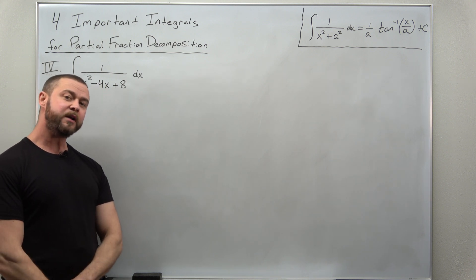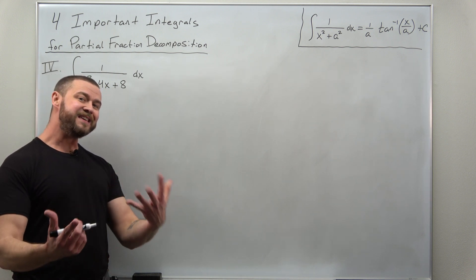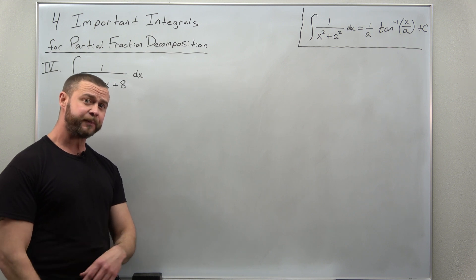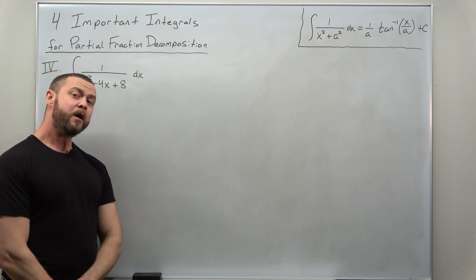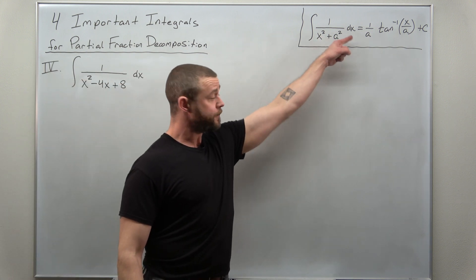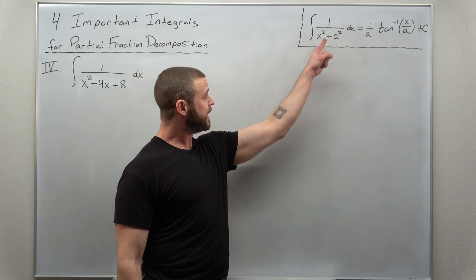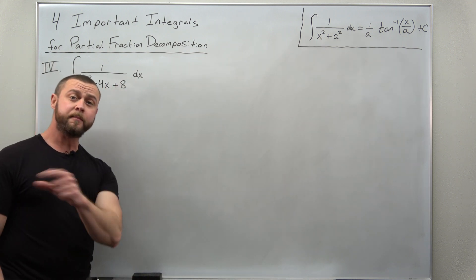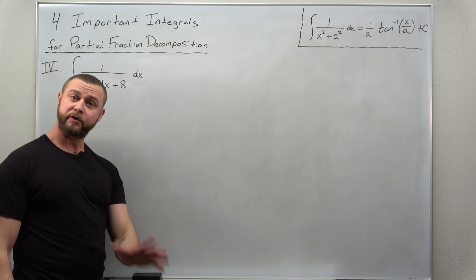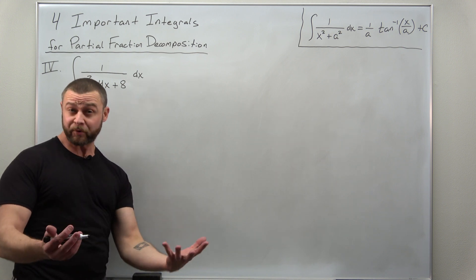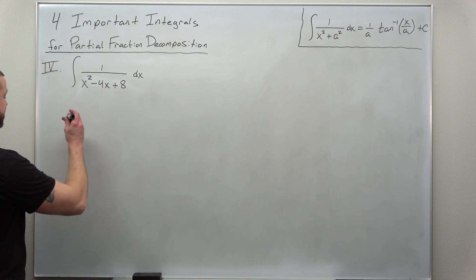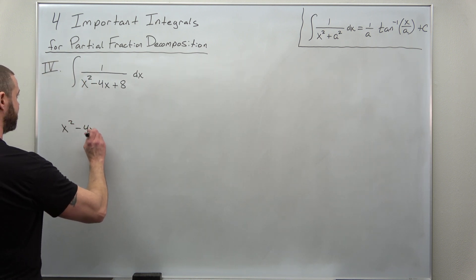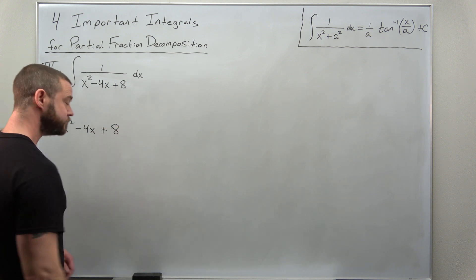Now, this is typically going to be encountered in the irreducible factor case. So this denominator is not going to factor. So what we do to make use of this formula, and it looks similar but without the x in the middle, is we go through completing the square. Now, there's a number of ways to implement completing the square. Here's the way I like to teach my students. Let's take this denominator, x squared minus 4x plus 8.